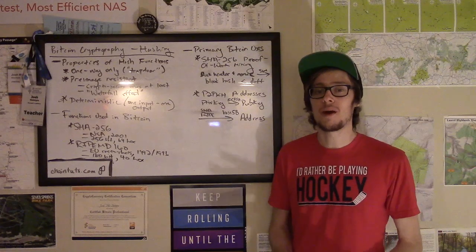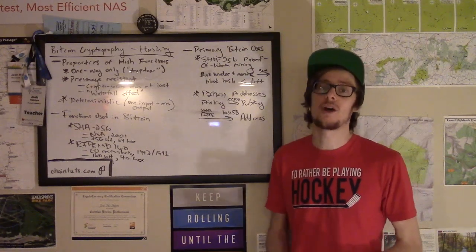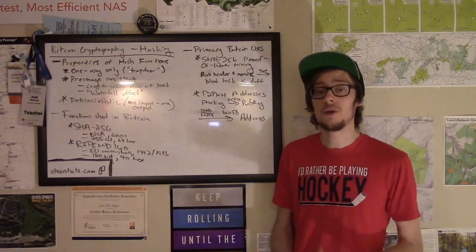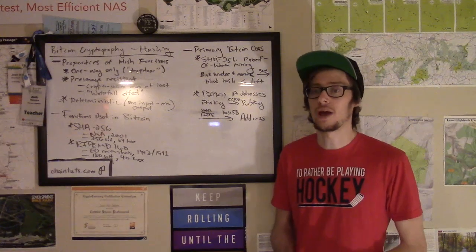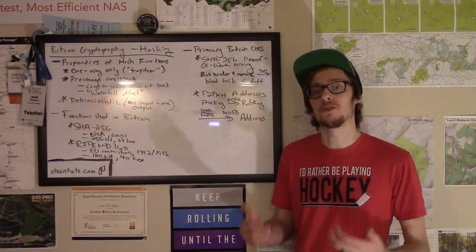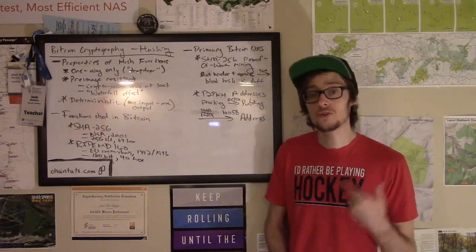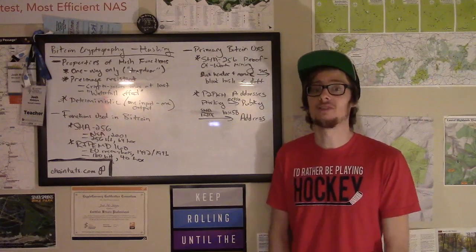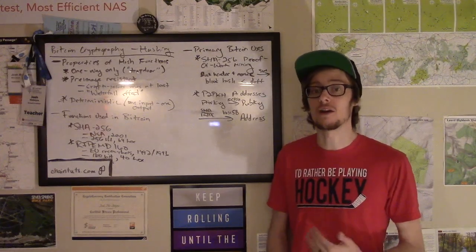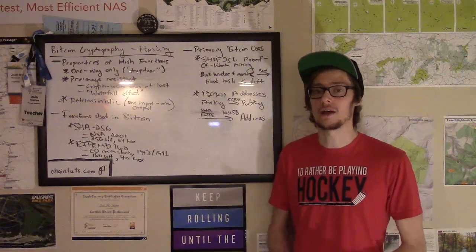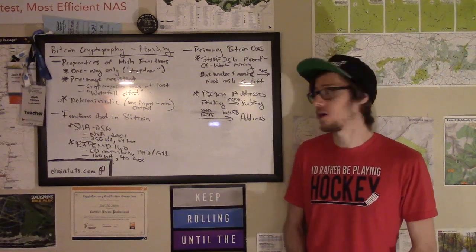So now we know a little bit about the important properties of cryptographically secure hash functions, and we know which versions are used in Bitcoin. But how are these actually applied to cryptocurrency systems? Well, there's two particular applications I find to be really interesting and very important for securing these peer-to-peer crypto networks.